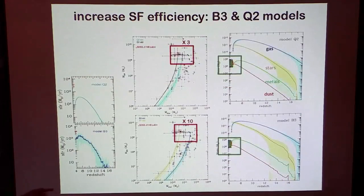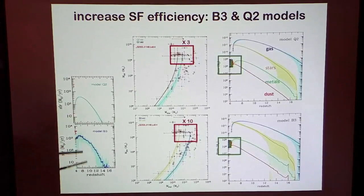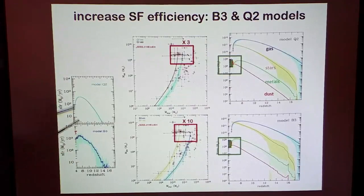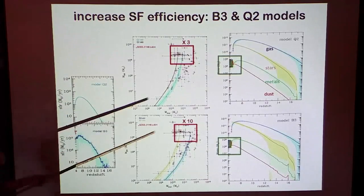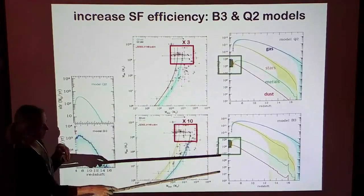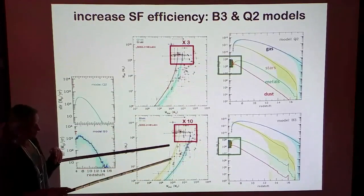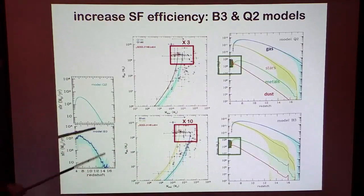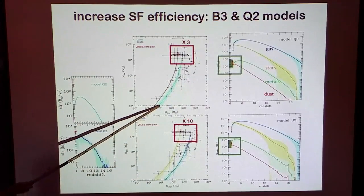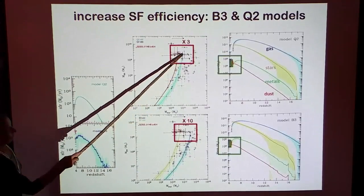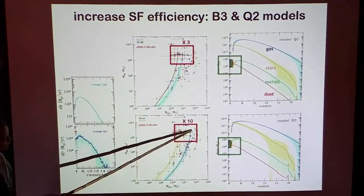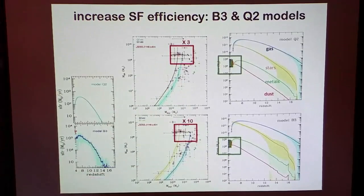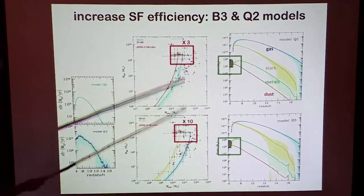The next attempt was to increase the star formation efficiency. I show you again two different models — a quiescent model and a bursty model — with increased star formation efficiency. Now you can fit the observed chemical properties, but at the price of increasing the final integrated stellar mass. Essentially you have this evolution where, depending on the model, you can exceed the dynamical mass constraint by a factor of 3 to 10.